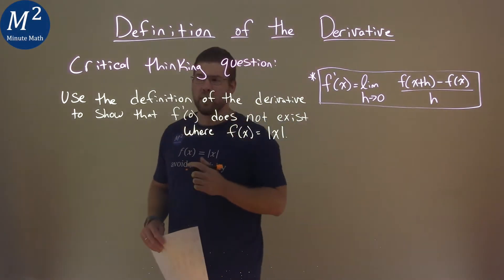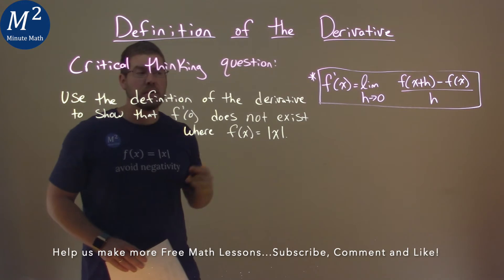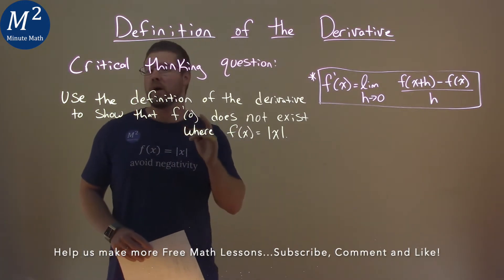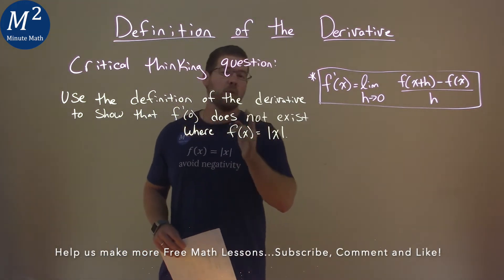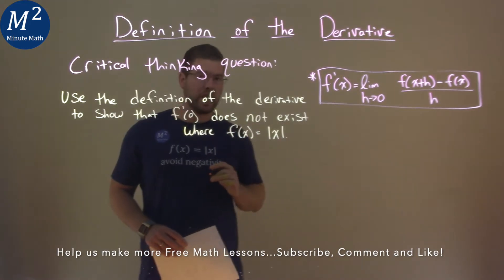We're given this critical thinking question: Use the definition of the derivative to show that f prime of zero does not exist, where f of x is equal to the absolute value of x.